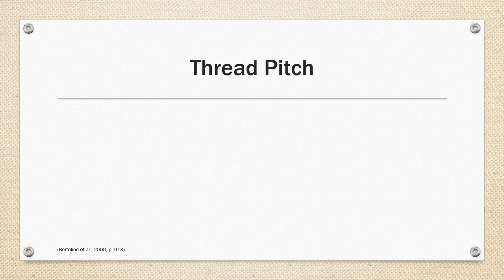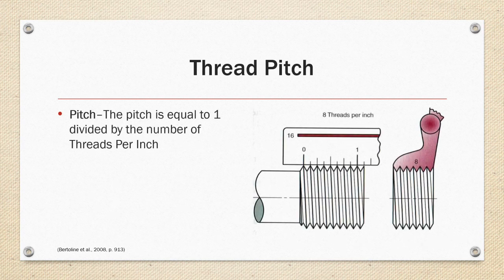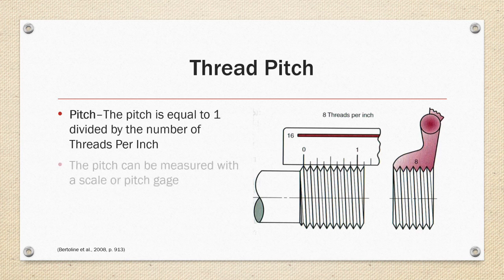Thread pitch. The pitch is equal to one divided by the number of threads per inch. The pitch can be measured with a scale or a pitch gauge as shown on the right. In the example there are eight threads in the span of one inch, so in this example with both the gauge and the scale, the TPI would be eight threads per inch.